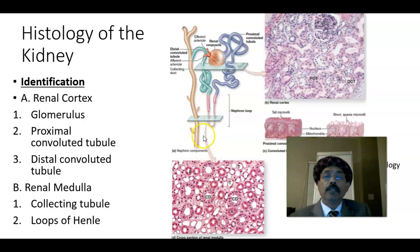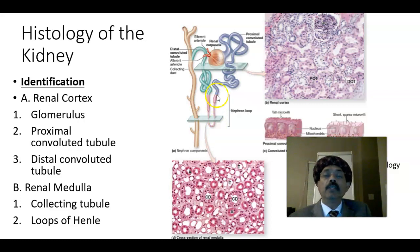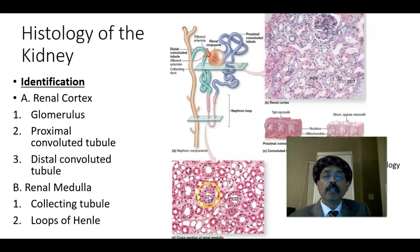We have the loop of Henle — the descending limb and the ascending limb of the loop of Henle, including the thick ascending limb and the thick descending limb. In this image, we can see the collecting duct and the parts of the loop of Henle.